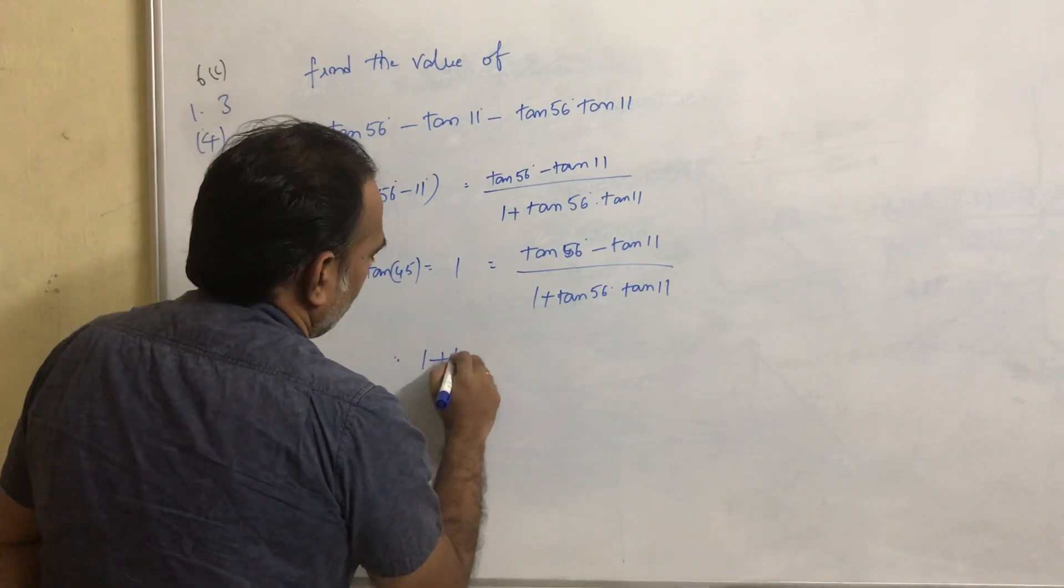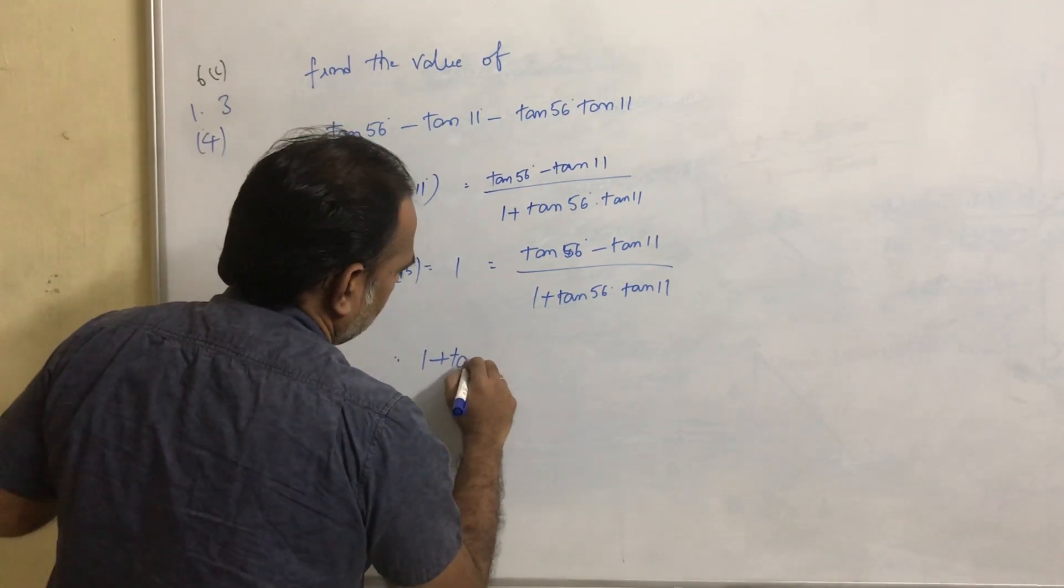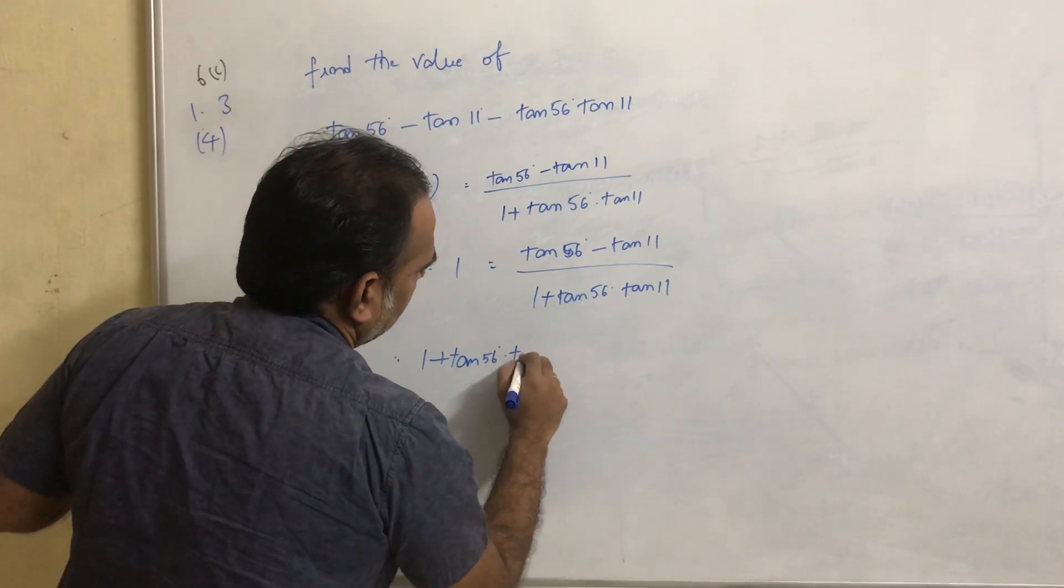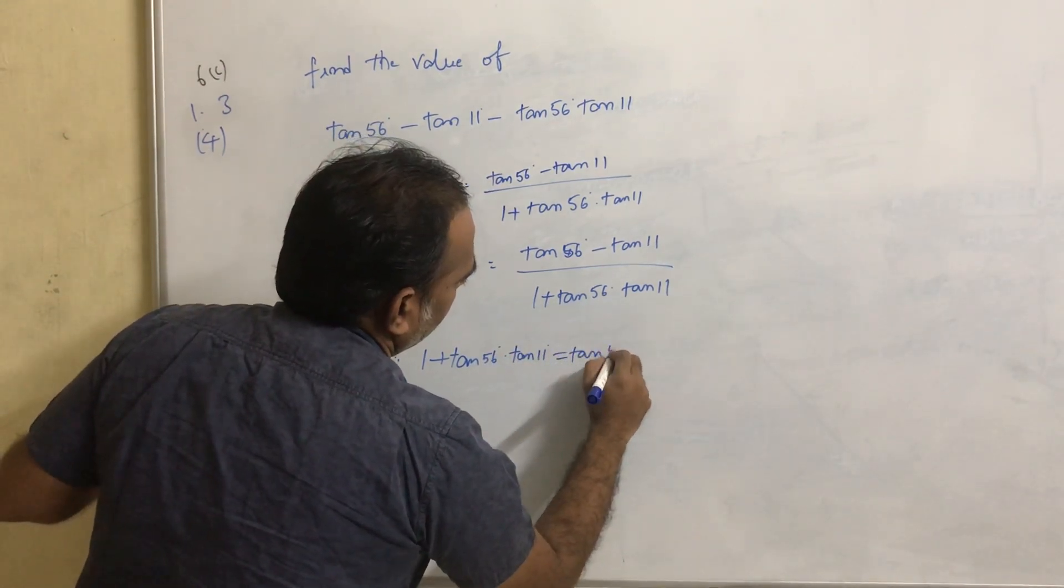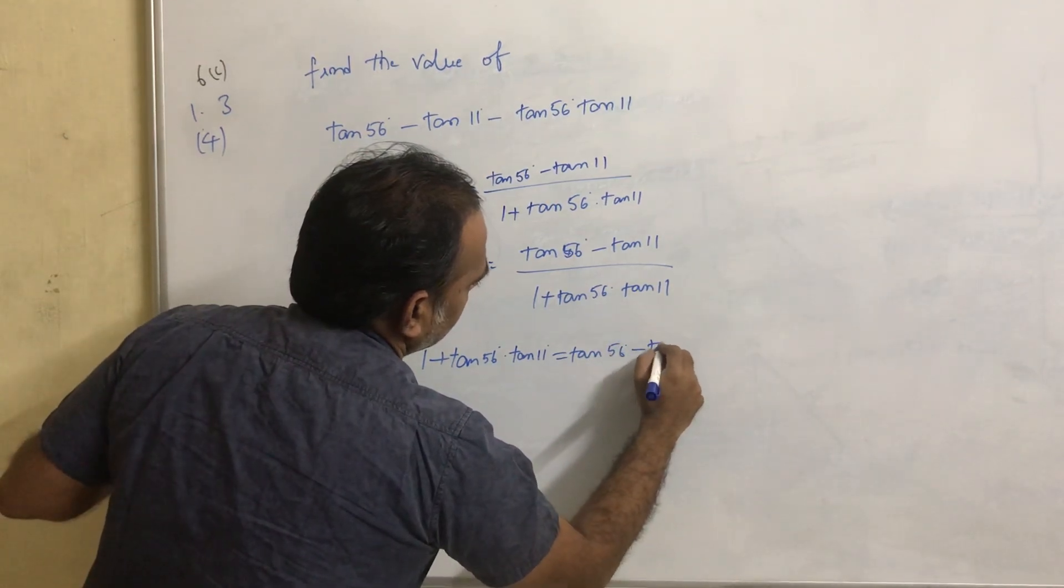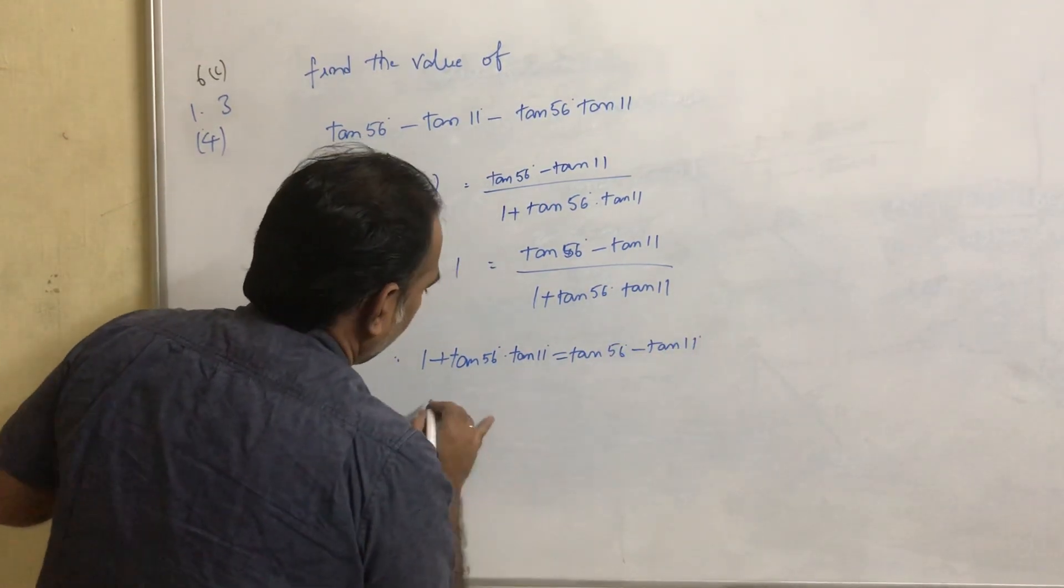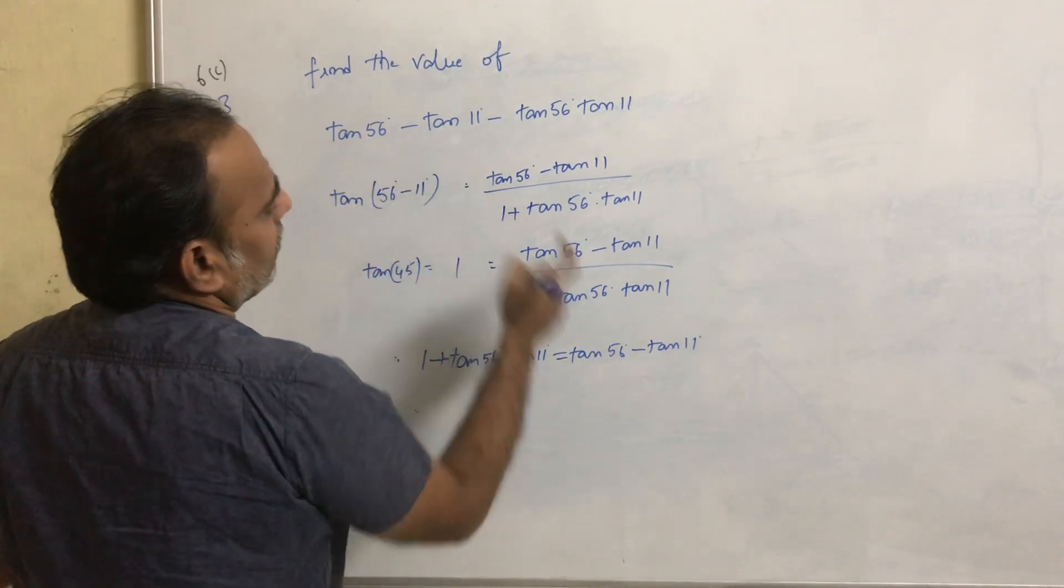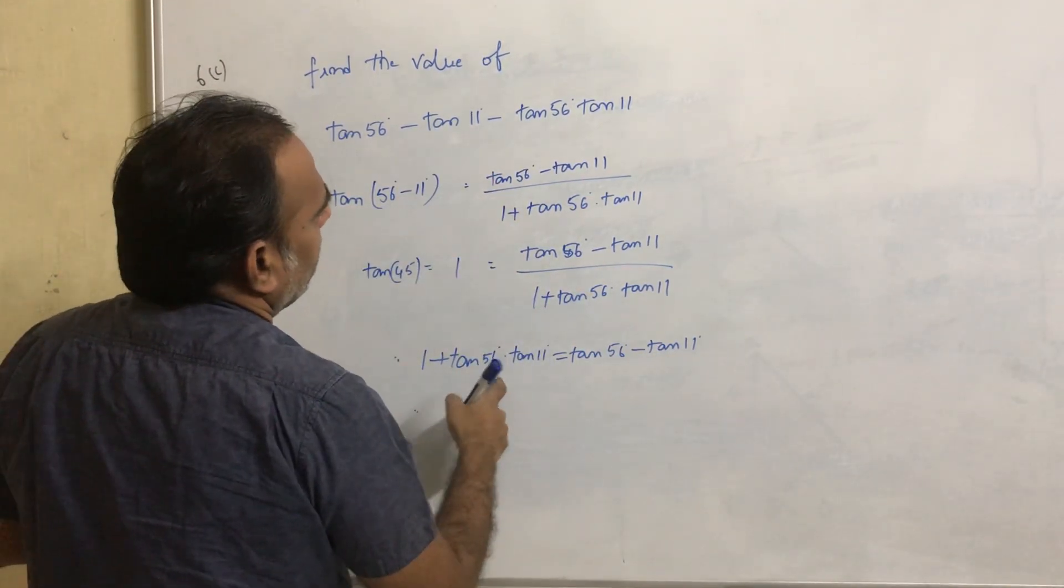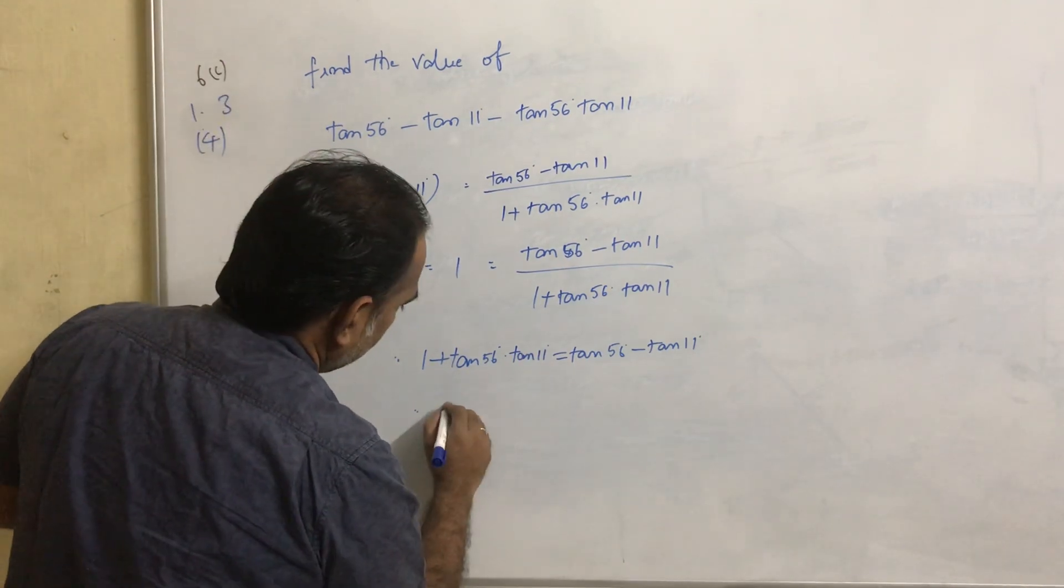This can be written as 1 + tan 56° into tan 11° multiplied by tan(56° - 11°) equals tan 56° - tan 11°. See here it is tan 56° - tan 11° - tan 56° tan 11°.